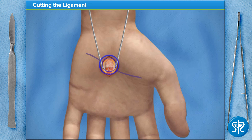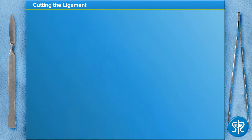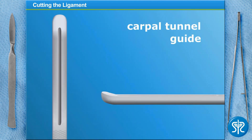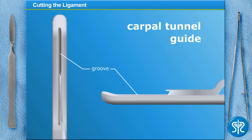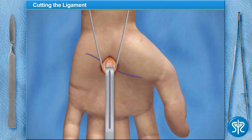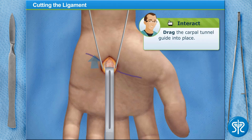With the transverse carpal ligament exposed, I'll need you to slip a carpal tunnel guide into the incision. This is a blunt-tipped instrument with a groove on the upper surface to accommodate a special knife. The carpal tunnel guide is placed down the carpal tunnel and underneath the ligament, and is used to protect the underlying nerve and tendons. Go ahead and push the carpal tunnel guide into place.